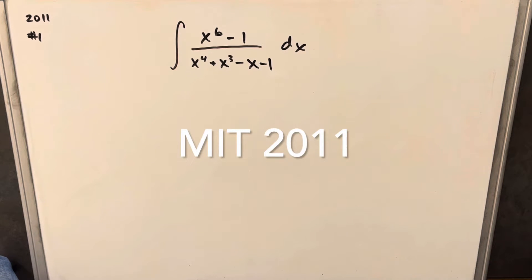We have another integral here from the MIT Integration Bee. I'm starting on the quiz from 2011, problem number one. We have the integral of x to the 6 minus 1 over x to the 4th plus x cubed minus x minus 1 dx.